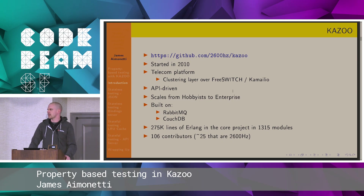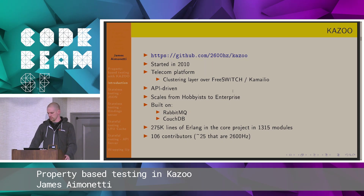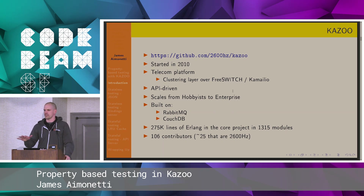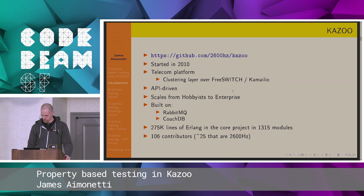On the telephony side, we leverage FreeSwitch, which is sort of the better brother of Asterisk, and Kamailio, which is the better brother of OpenSips. We stand on the shoulders of giants, and Kazoo is sort of a clustering layer on top of all of that to present a logical switch and a series of APIs for you to leverage when building telephony applications.